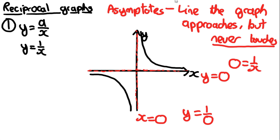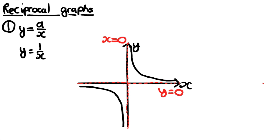Asymptotes are really important for reciprocal graphs because there are no y-intercepts or roots. You must draw them in — the actual lines, as shown in red — and you must label them. When sketching reciprocal graphs, asymptotes replace the y-intercepts and roots to get the marks.